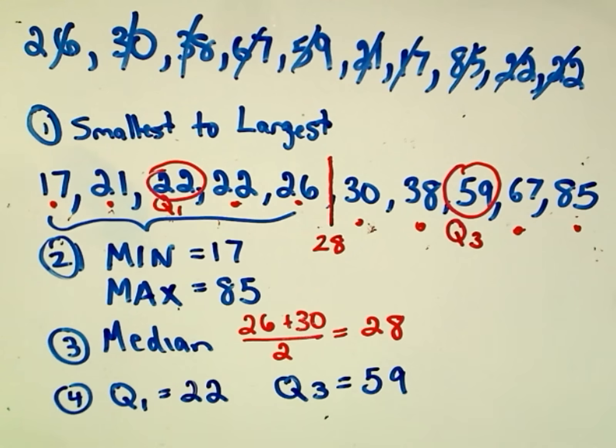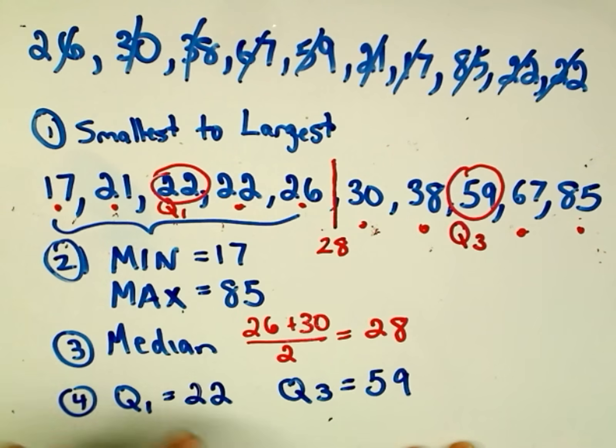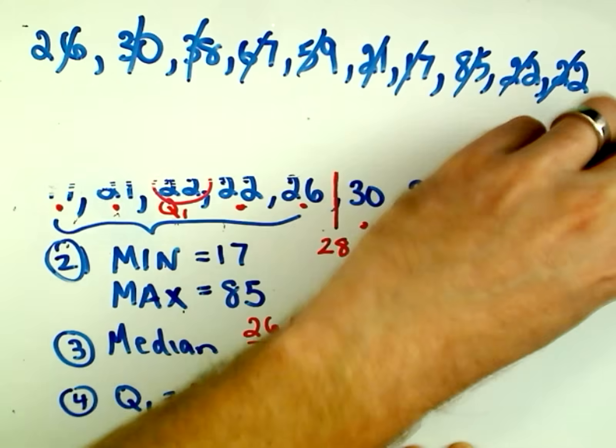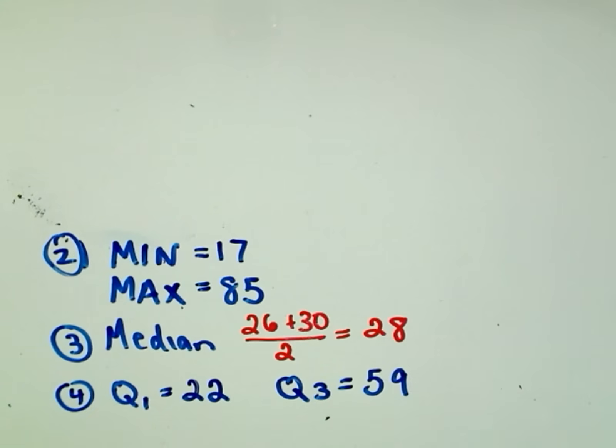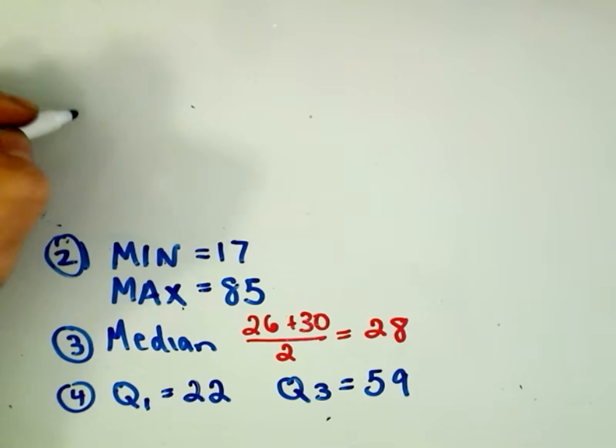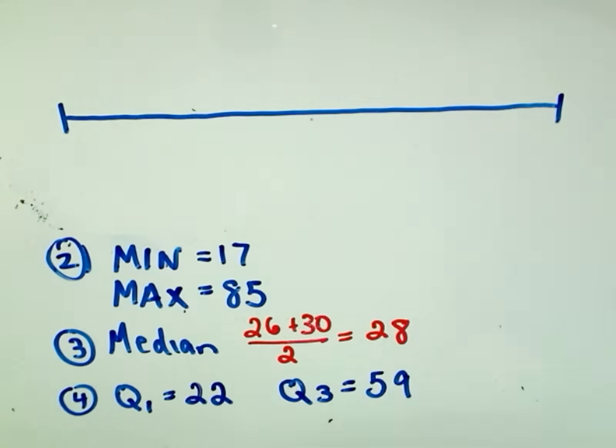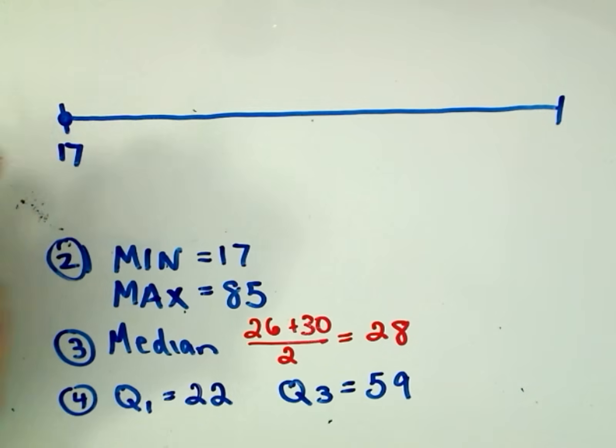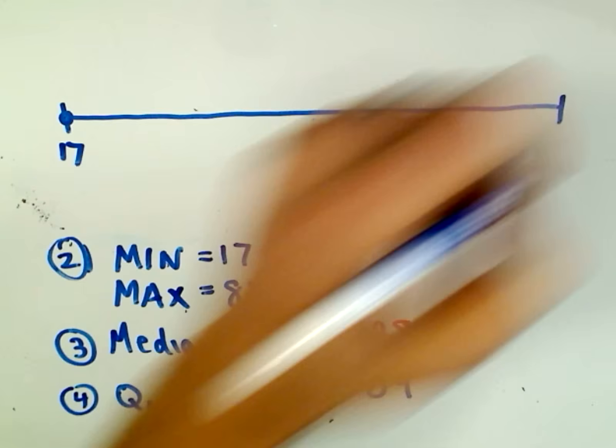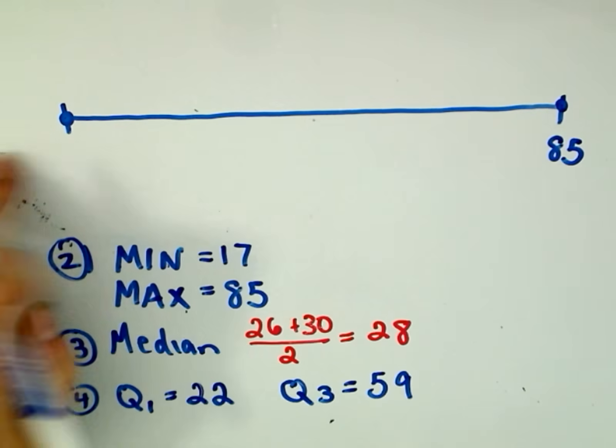Alright, and now all we have to do is simply make our little box and whisker plot based on all these numbers. So I think we've got all the numbers we need: the minimum, the maximum, the median, Q1, and our Q3 value. Okay, so forgive my poor artistry, probably not going to be the best, but hopefully you'll get the picture. So our minimum value is going to be the value 17, our maximum value is going to be the value 85. Okay, so that's our minimum and our maximum there, so we've put those on there.